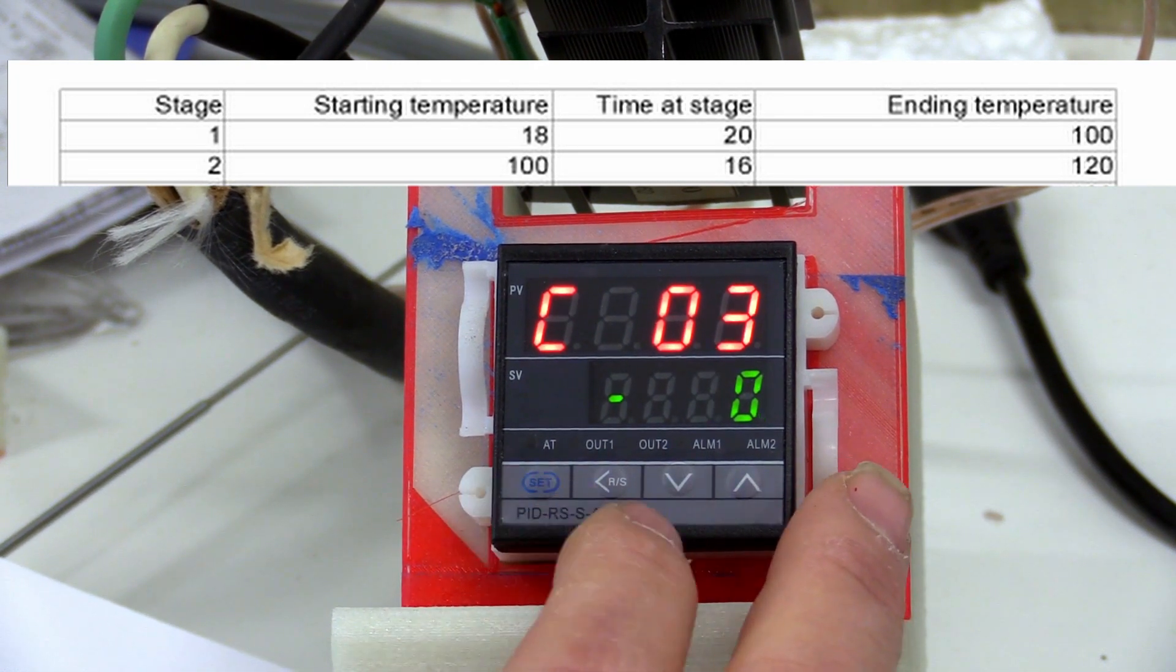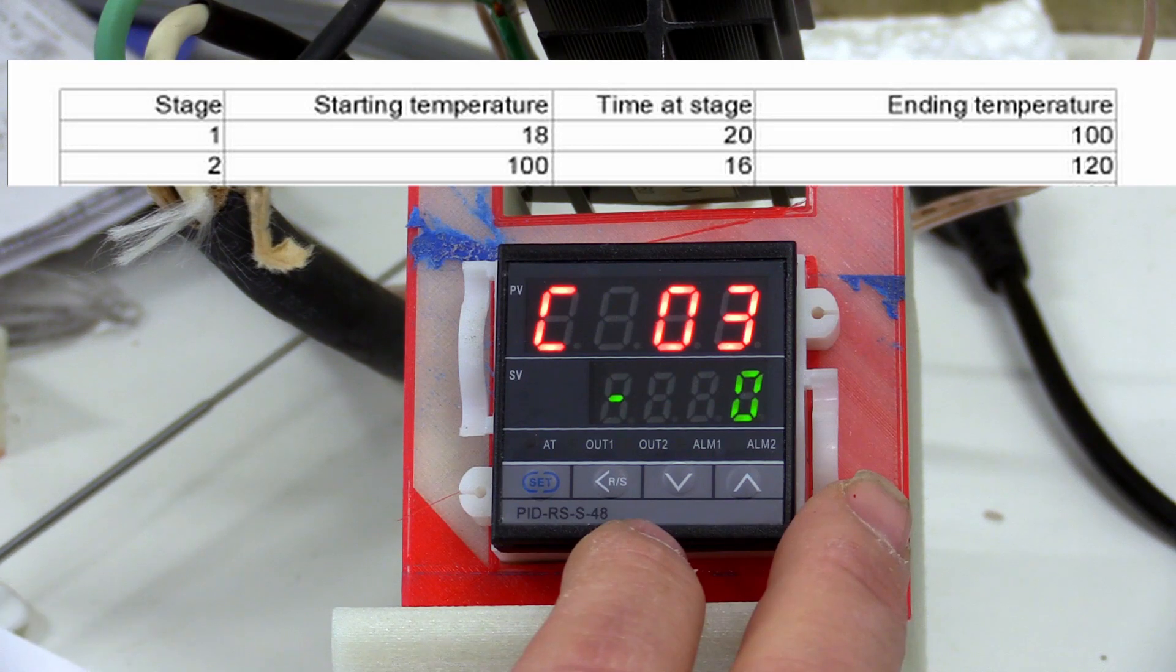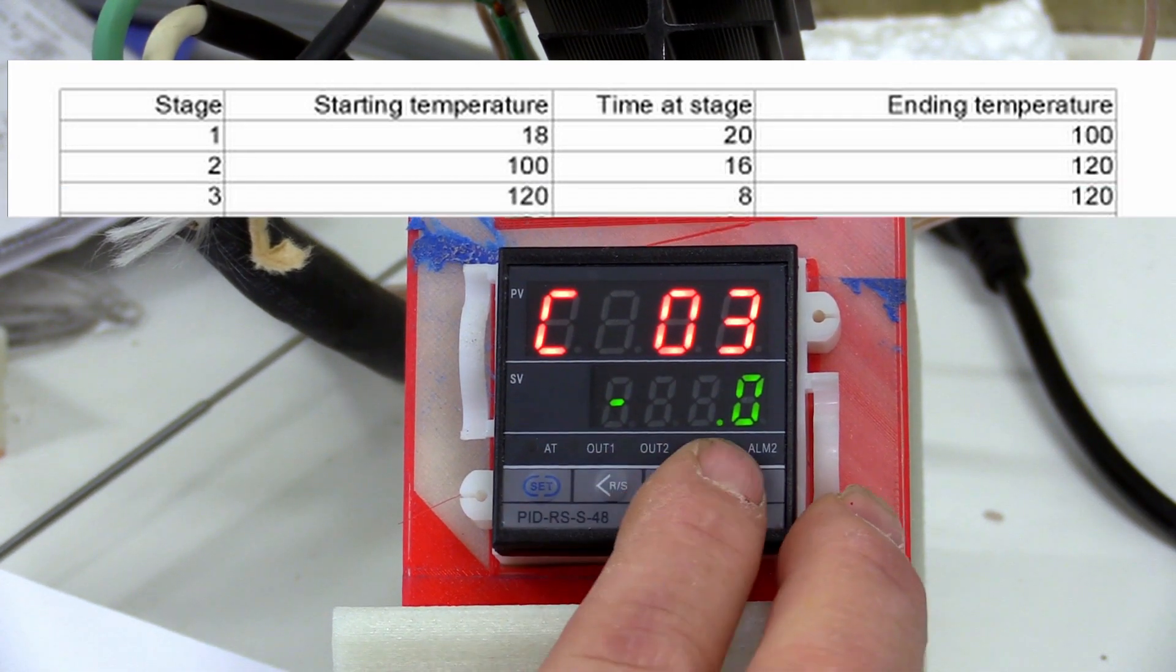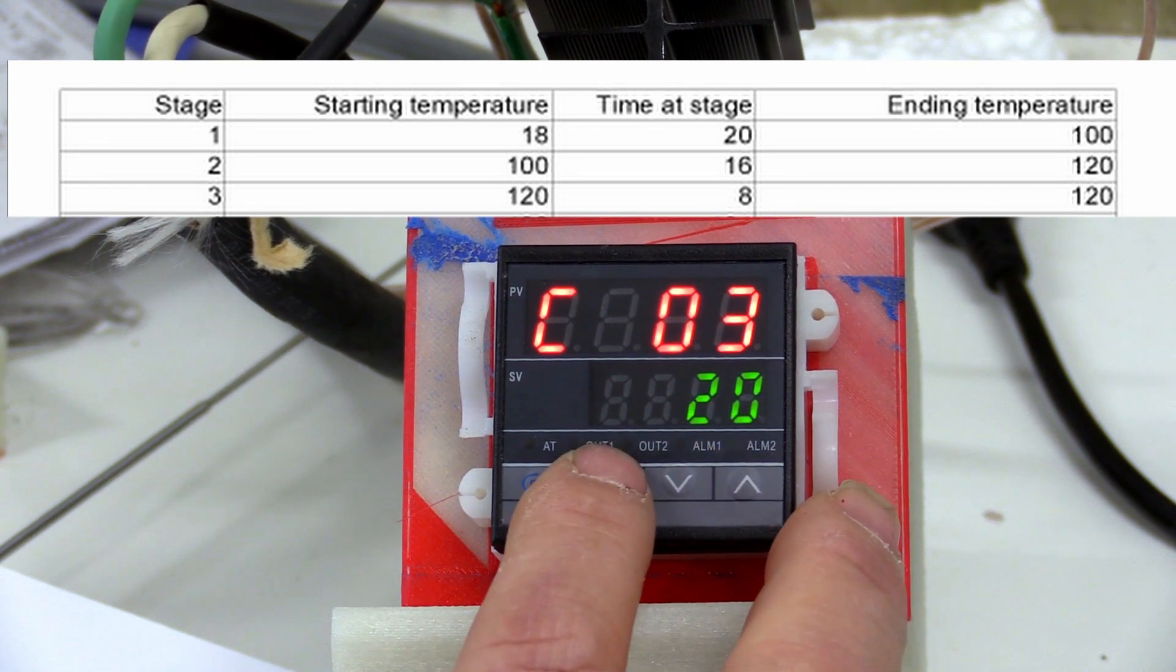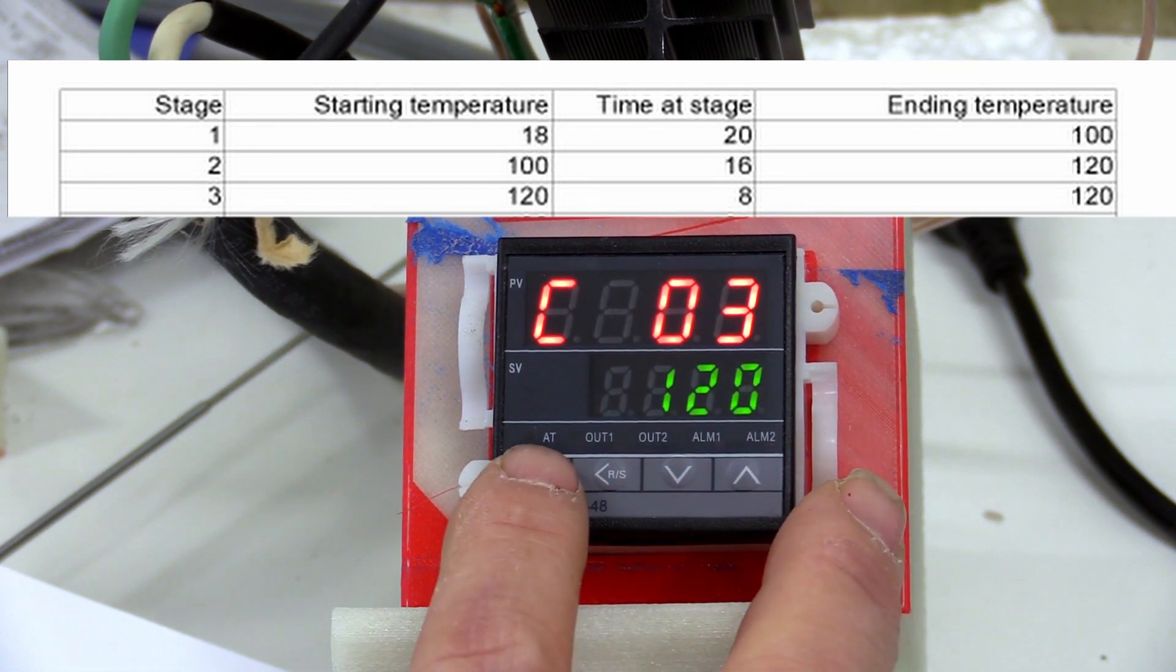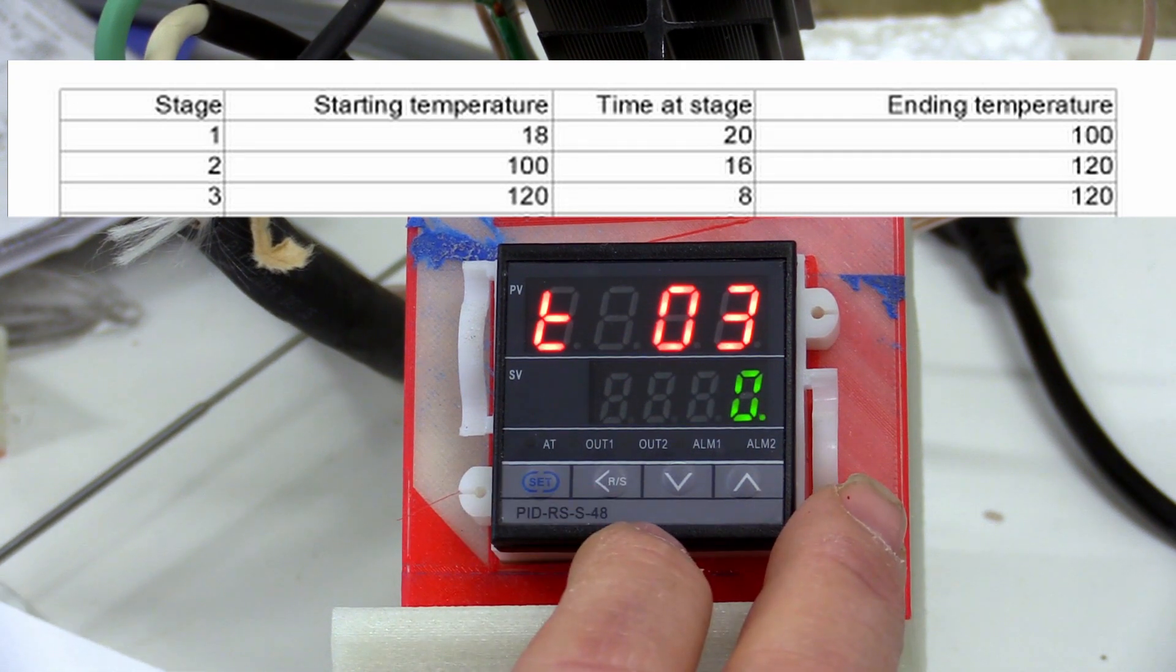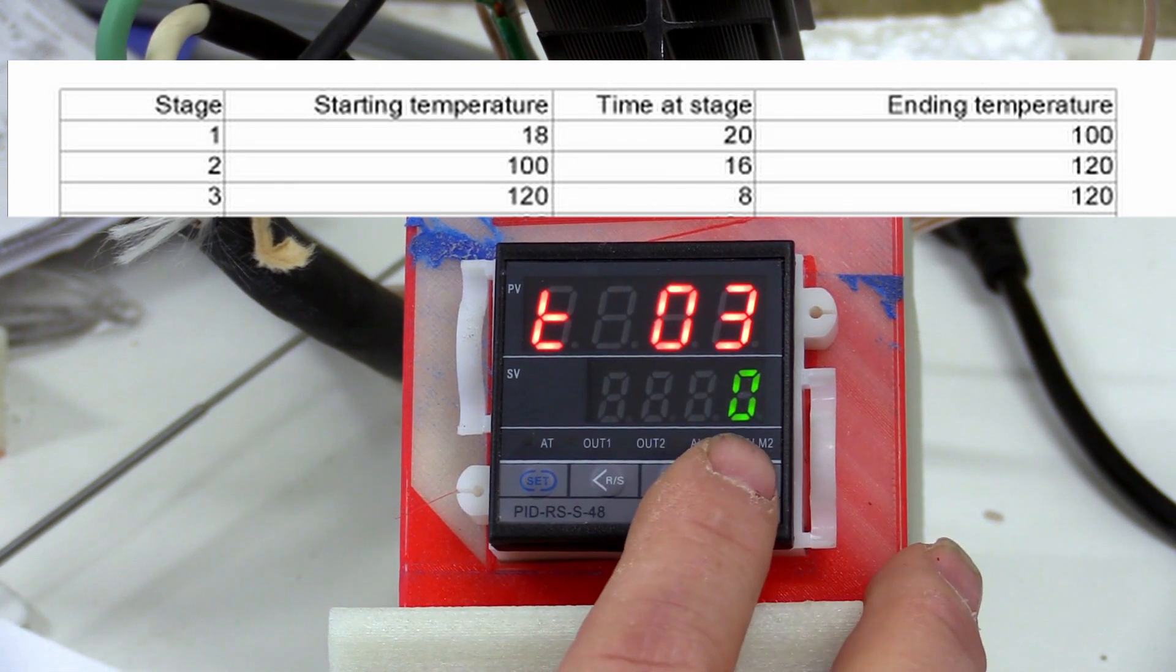Now we're in stage 3. Enter 120, which is the starting temperature for this stage, and it's also the ending temperature of the previous stage. Press set. Enter the time of 8 minutes and press set.